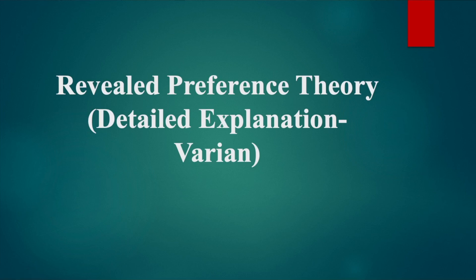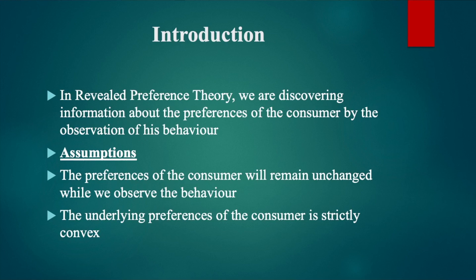Today I am going to explain the revealed preference theory. In indifference curves, we used the information about the consumer's preferences and the budget constraint to determine his demand. In revealed preference theory, we are discovering information about the preferences of the consumer by the observation of his behavior. We try to develop some tools to do that from this theory. Here, we are assuming that the preferences of the consumer will remain unchanged while we observe the behavior.